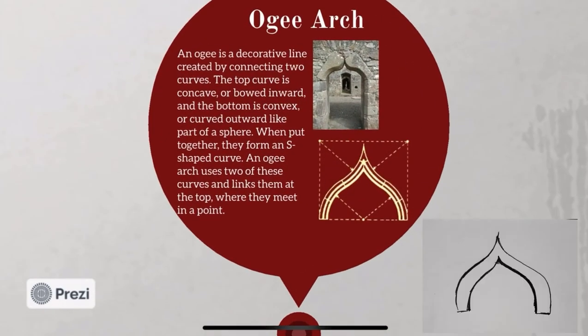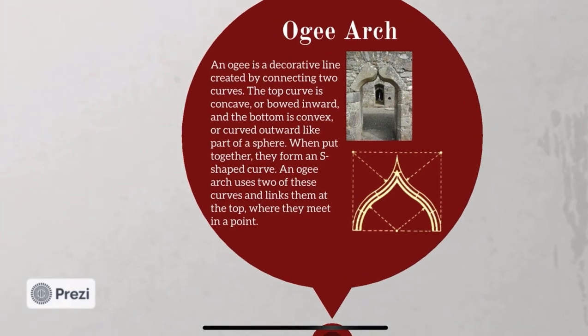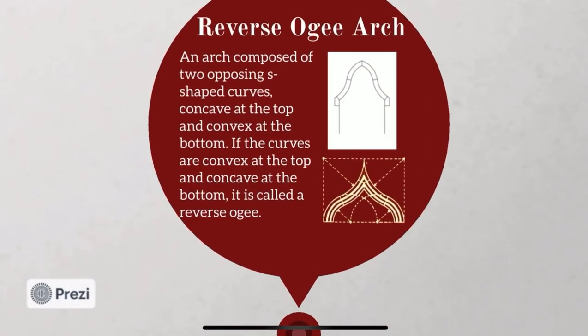And then came the OG arch. This type of arch is formed by joining two S-shaped curves; an OG arch uses two of these curves and links them at the top where they meet in a point. We also have the reverse OG arch, where instead of using two S-shaped curves going the same way, it uses two opposing S-shaped curves.